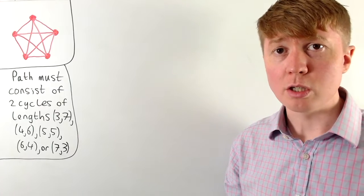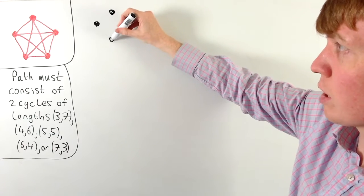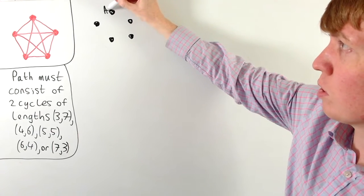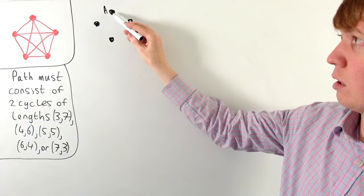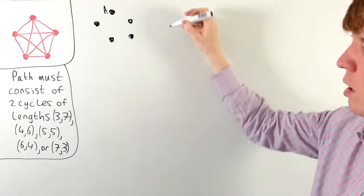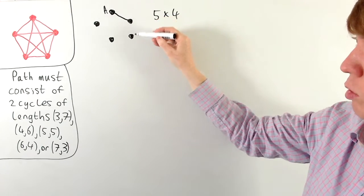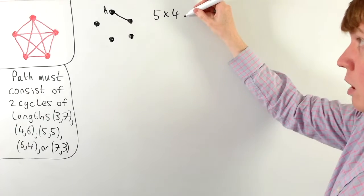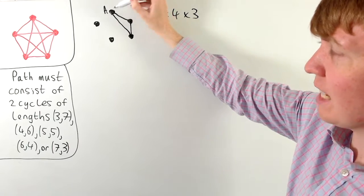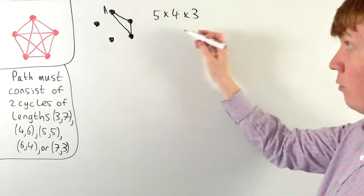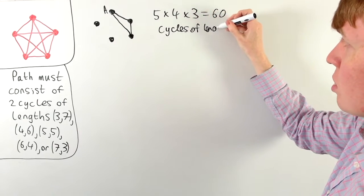How many cycles of length three are there to start with? Drawing our graph, we have five choices for our first vertex. Once we choose the first vertex A, we have four choices for the next vertex, then three choices for the vertex after that. Once at the third vertex, we must return to A to complete the cycle of length three. So we get five times four times three equals 60 cycles of length three that we could start with.